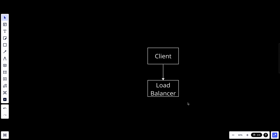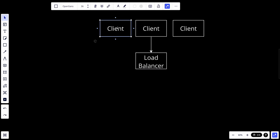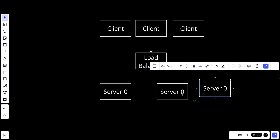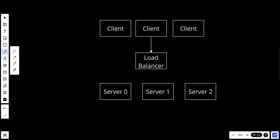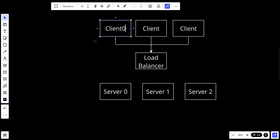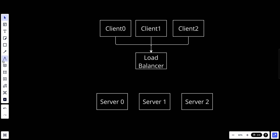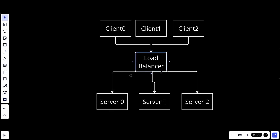That component is what we call a load balancer — it basically balances the load. So if we have multiple clients and multiple servers — server zero, server one, server two, and server three — the load balancer distributes all incoming requests from client zero, client one, and client two across those servers.